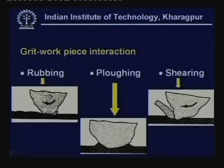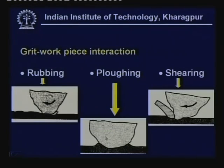The most desirable stage is the third: removal of chip by shearing. The grit passes through all three stages—sliding, then ploughing, and ultimately shearing. The efficiency of the grit and the conditions determine whether the grit is engaged mainly in shearing, ploughing, or sliding, and that decides the level of force, temperature rise, and specific energy requirement.